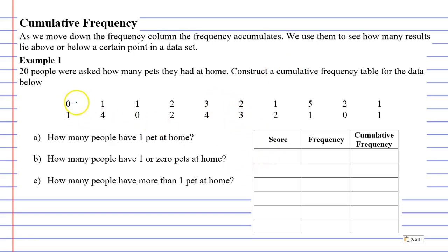You'll notice that our scores range from 0 to 5. So we're going to go 0, 1, 2, 3, 4, 5.